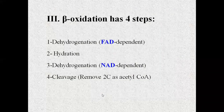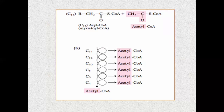For carbon-14 fatty acid, six rounds of beta-oxidation give six FADH2 and six NADH, providing a lot of energy. For a 16-carbon fatty acid, it will give 8 acetyl-CoA and pass through seven reactions. The same formula applies to other even-carbon fatty acids.